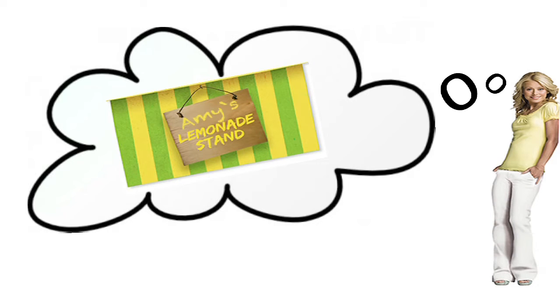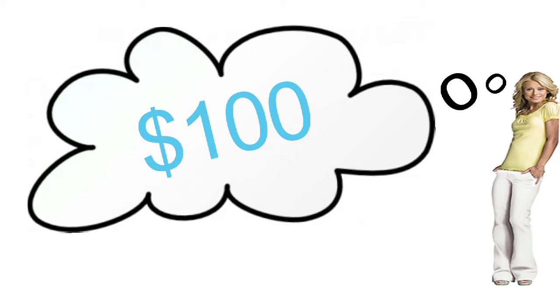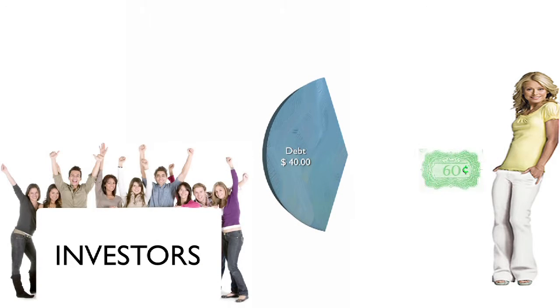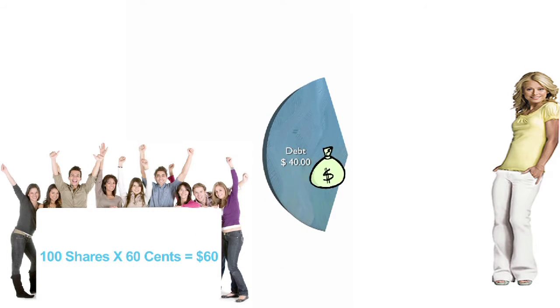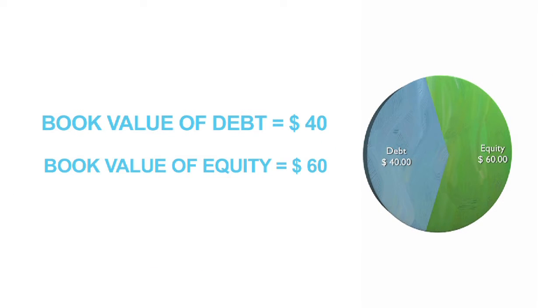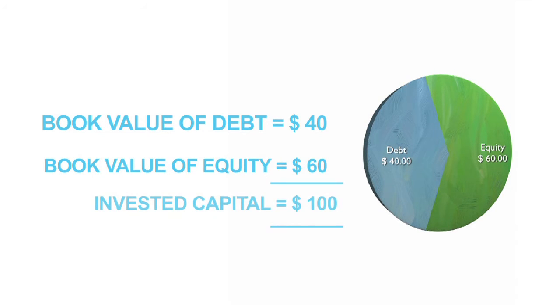First, let's take the example of Amy's lemonade stand to understand some key concepts and ratios. To set up her company, Amy needs $100. She finds this in two ways: she raises capital by borrowing $40, and she issues equity worth $60 at $0.60 per share. We refer to these numbers as the book value of debt and the book value of equity. Together, these numbers constitute the invested capital, which in Amy's case is $100.